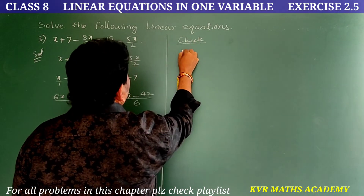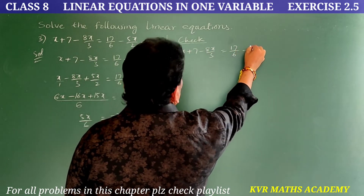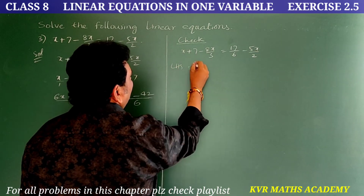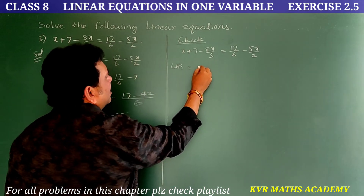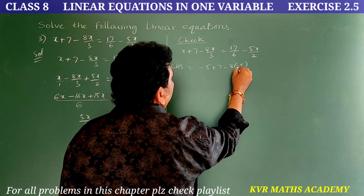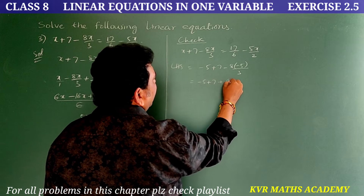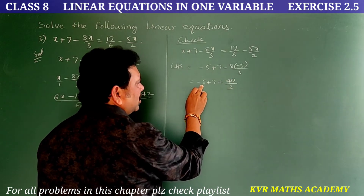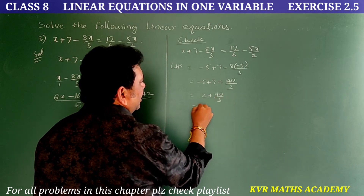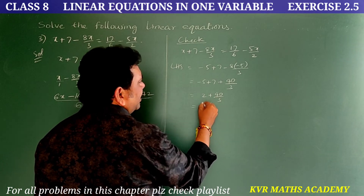Check — given equation: x + 7 - 8x/3 = 17/6 - 5x/2. Take LHS, substituting x = -5: -5 + 7 - 8×(-5)/3 = -5 + 7 + 40/3 = 2 + 40/3. Converting: 6/3 + 40/3 = 46/3. So LHS = 46/3.